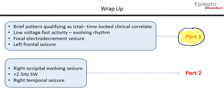To wrap up, in part 1 of this module we talked about focal seizures, specifically those with a brief pattern qualifying as ictal and time-locked clinical correlate, low-voltage fast activity with an evolving rhythm, a focal electrodecrement seizure, and a left frontal seizure. Stay tuned for part 2, covering the right occipital evolving seizure, a seizure with greater than 2.5 Hz spike wave activity, and a right temporal seizure.